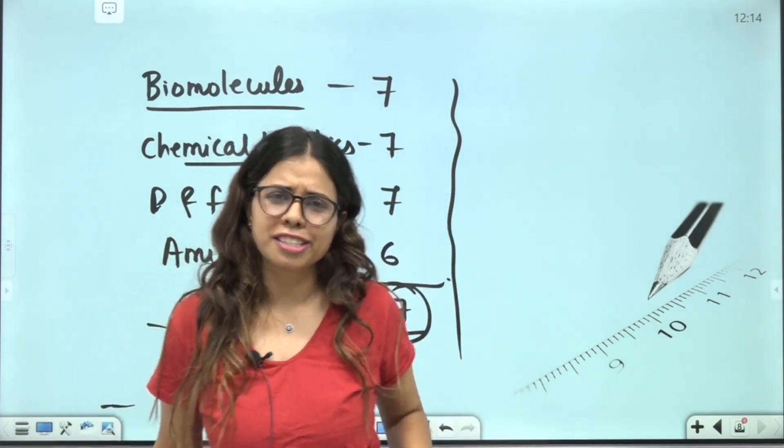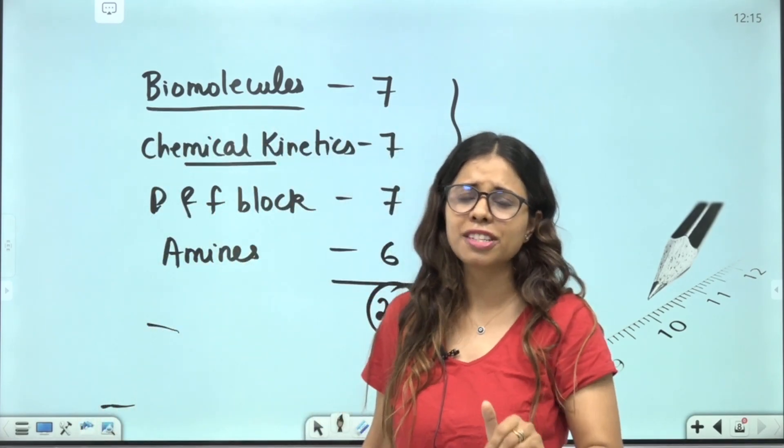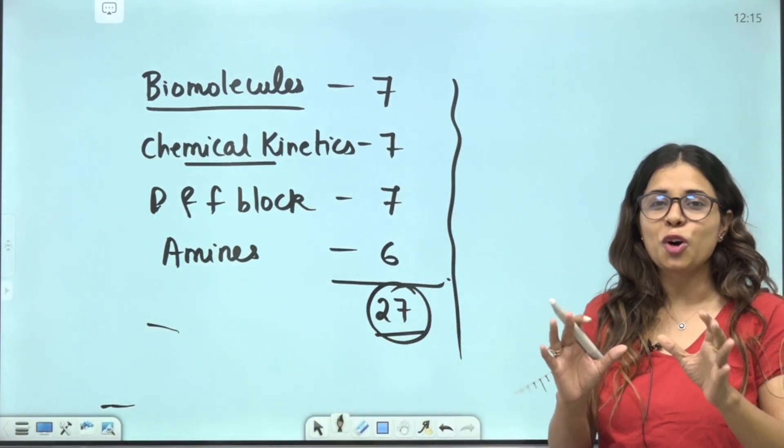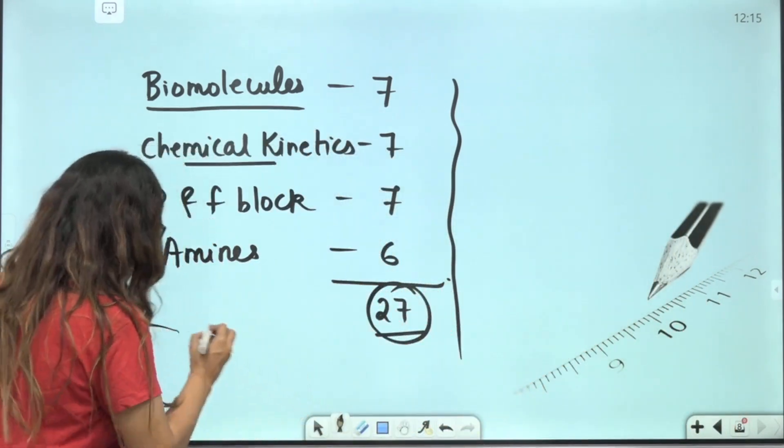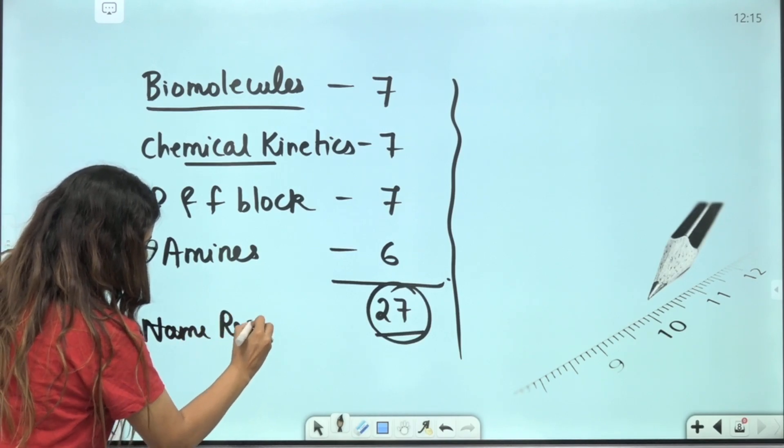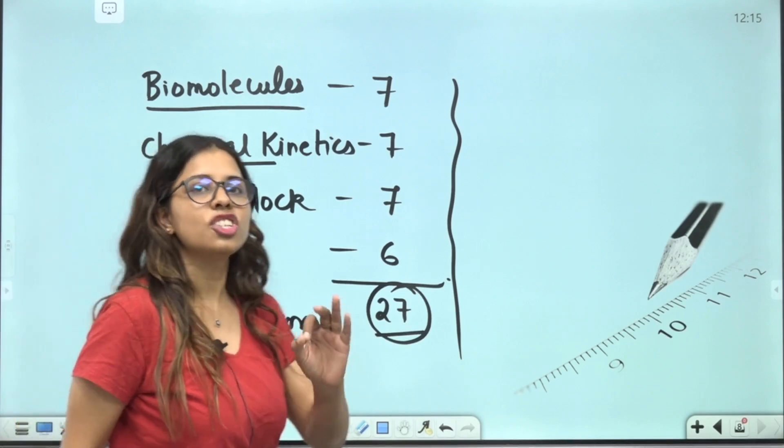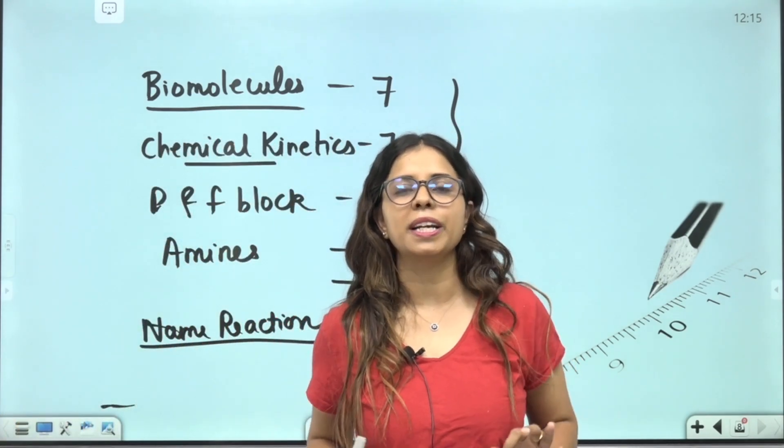To be on the safer side, that's why I am saying 4 chapters. But to be on the safer side, if you have to add something else, you will also add something else. So after this, what you will do, it will be name reactions. Name reactions. You will keep all of these, 30 total. I have shared it on telegram.